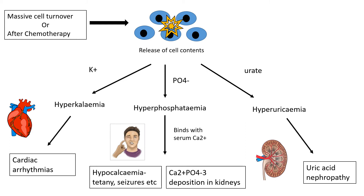Thirdly, we have uric acid released. This is derived from purines found in DNA — they break down, increasing the uric acid level in the blood. This can deposit in the kidney again and cause a uric acid nephropathy. So as we can see, the two main problems are arrhythmias and kidney failure, but low serum calcium can also sometimes be a problem.